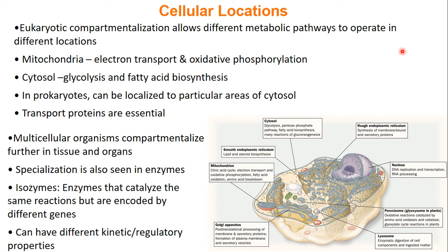When talking about the basis of metabolism, we have to realize that in a eukaryotic cell, these processes take part in different places of the cell. Eukaryotes have the advantage of compartmentalization, so different metabolic pathways operate in different locations. For example, the mitochondria will do your electron transport chain and oxidative phosphorylation, while the cytosol will do glycolysis and fatty acid biosynthesis.